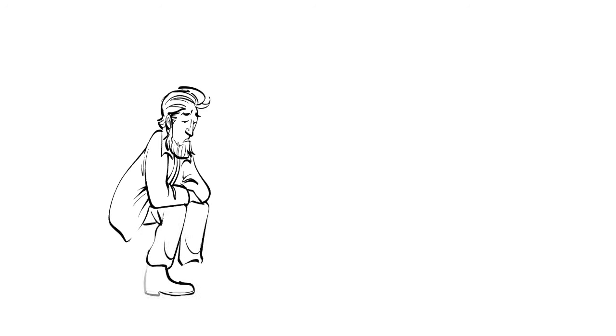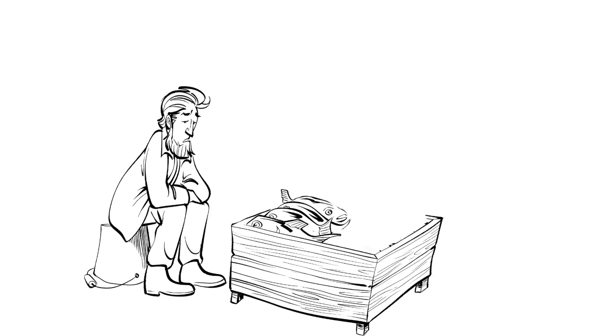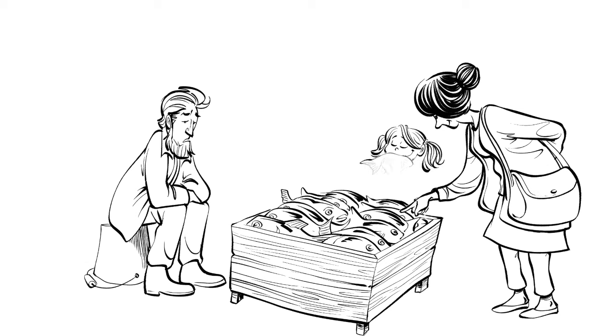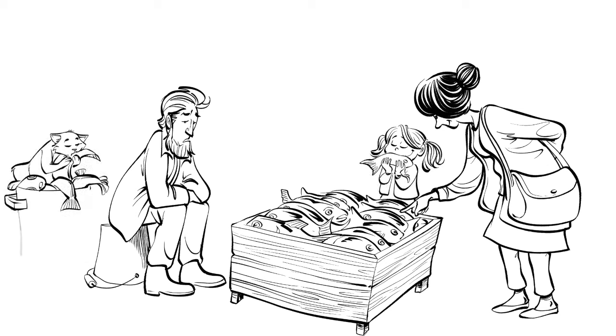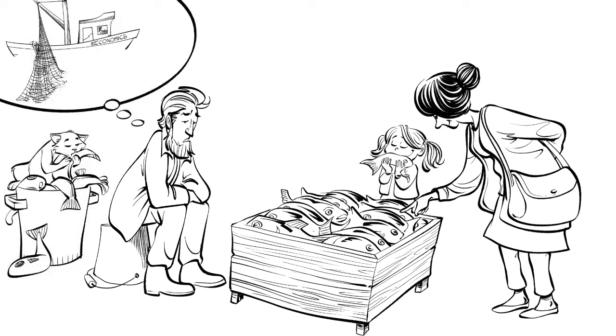Jimmy sells his catch at the local market. He knows that he can sell only fresh fish, so he throws the bad ones away, regardless of the time it takes him to find, catch and clean the fish.